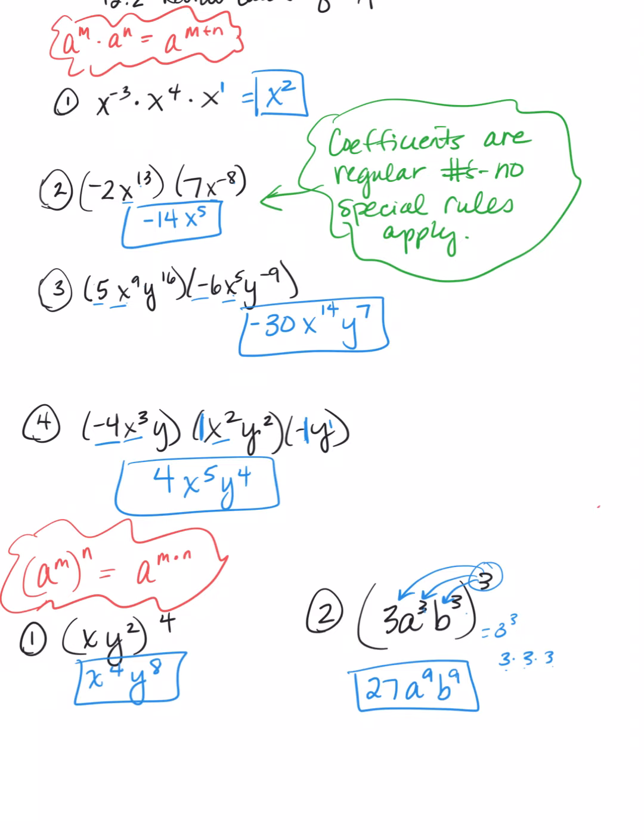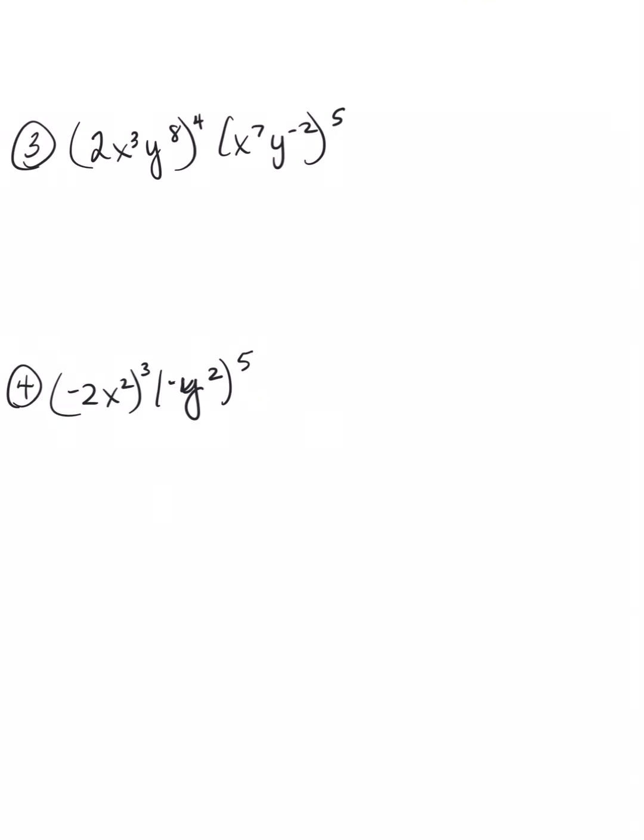Let's look at a couple more. This one is a little more complex. We're going to get rid of the parentheses first by distributing, if you will, that power across. So, 2 to the 4th. 2 times 2 is 4. 4 times 2 is 8. Times 2, one more time, is 16. x to the 3rd. So, 3 times 4 is 12. y, 8 times 4 is 32. So, it's got some big powers here. Now, we have x. 7 times 5 is 35. And y, negative 2 times 5 is negative 10. Now, they're just side by side. Nothing's being raised to the powers. So, now we're just adding across. Now, we're back to that original rule. So, the coefficients are 16 times 1 is leaving me with 16. Now, I look at my x terms. 12 plus 35 ends up with x to the 47th power. And then y, 32 minus 10 is to the 22nd power.